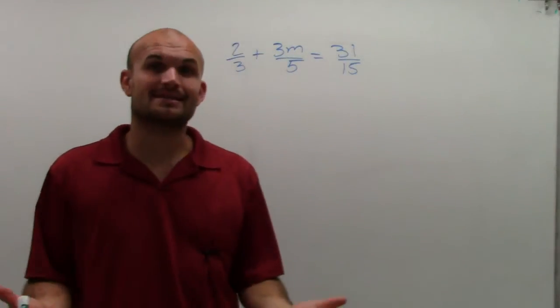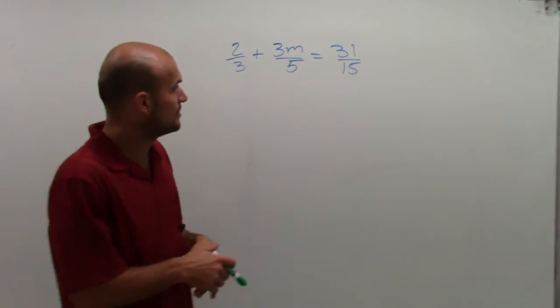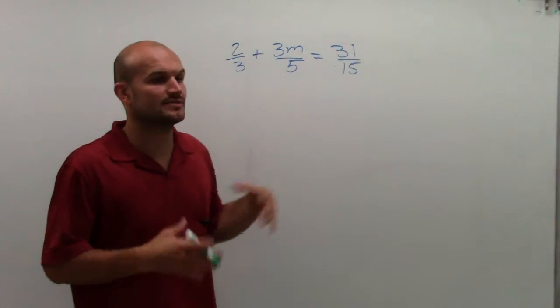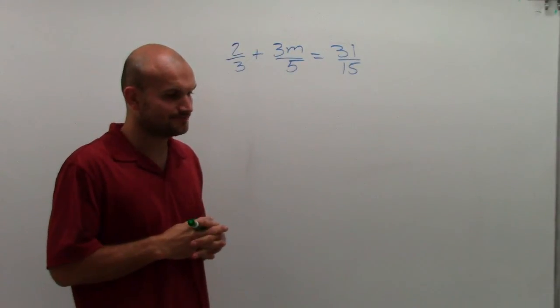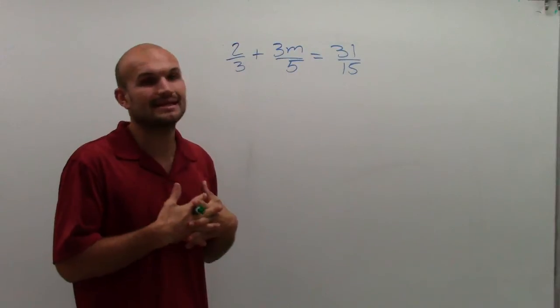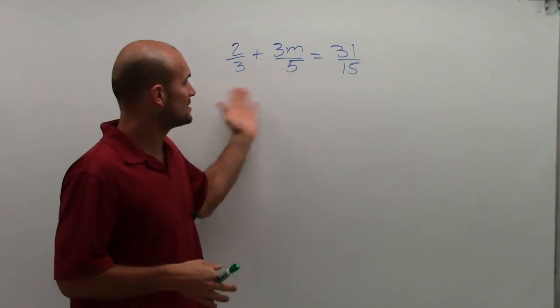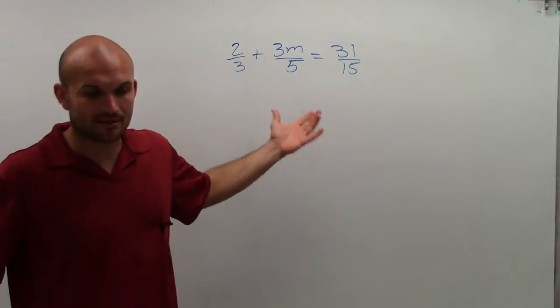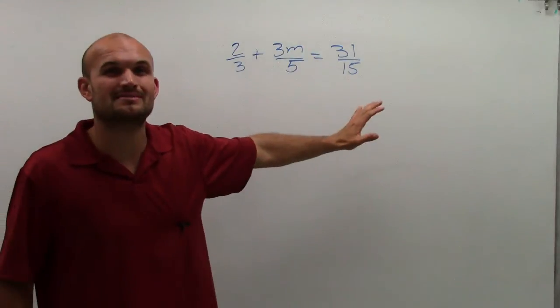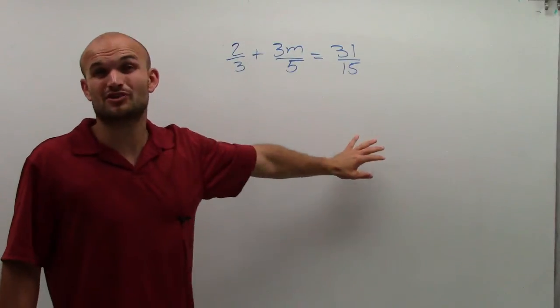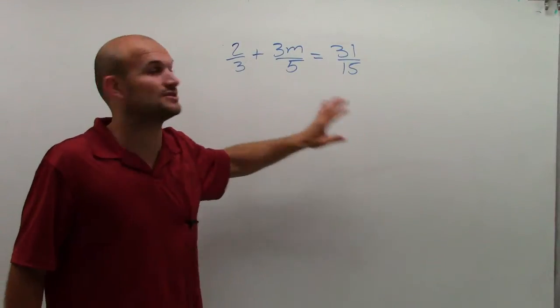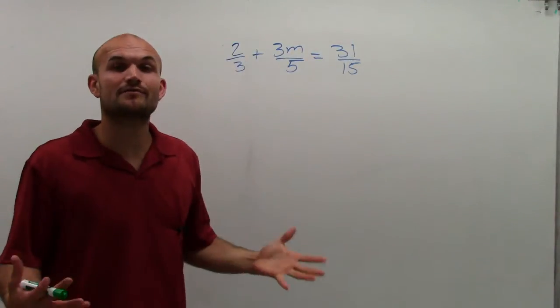So a technique that we can use, the way I'm going to show how to do this problem, is getting rid of the fractions. There are all these different fractions, and there is a possible way to get them to be all the same denominator, but I don't want to show you that way. I like to get rid of the fractions entirely so I don't have to worry about them.